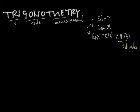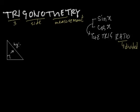Since trigonometry is about triangle measurement, the first thing that comes to mind is a triangle. If this is a right angle triangle, then one angle is the right angle — 90 degrees. The most important thing to remember: the side opposite the right angle is called the hypotenuse, which is the longest side, because the largest angle in a right triangle is 90 degrees.